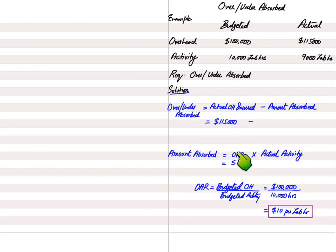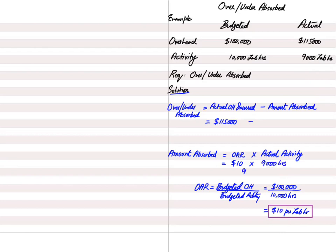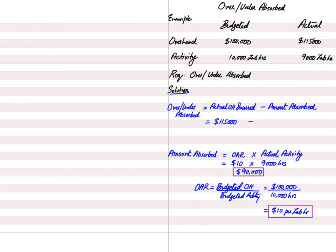We multiply the OAR of $10 per labor hour by the actual activity of 9,000 labor hours — since the OAR was based on labor hours, actual activity must also be in labor hours. The total overhead absorbed in this year is therefore $10 × 9,000 = $90,000.